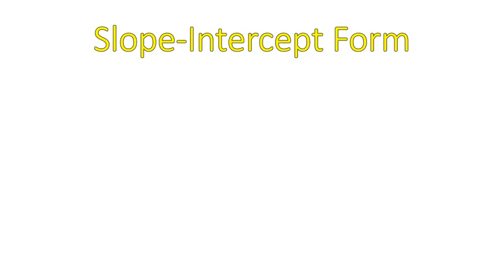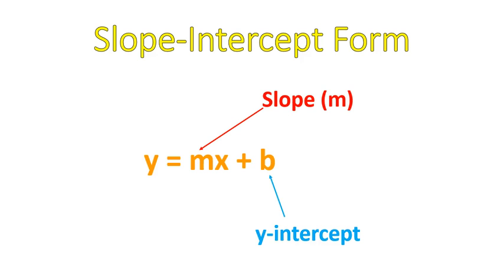First off, we have to understand what the slope-intercept form of a line is. This y equals mx plus b. There are actually four parts: the x value, the y value, and then there's that m and b. m is a letter that is used to represent slope, and b is the letter used to represent the place where the line crosses the y-axis. This is called the y-intercept.